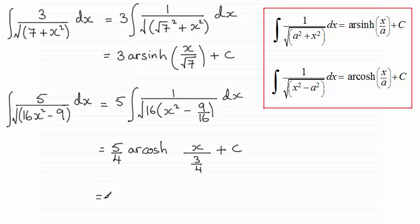And then tidying the fraction up what we end up with is 5 over 4 arccosh, and multiplying top and bottom by 4 gives us 4x over 3, and then plus that constant of integration C.